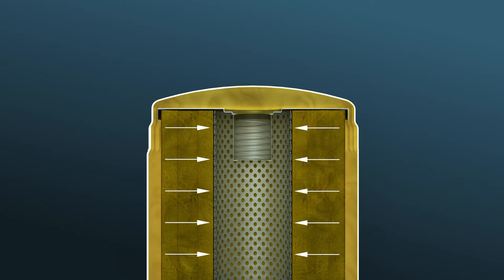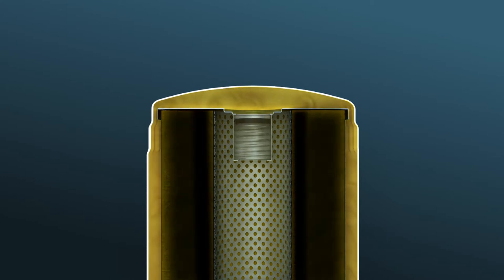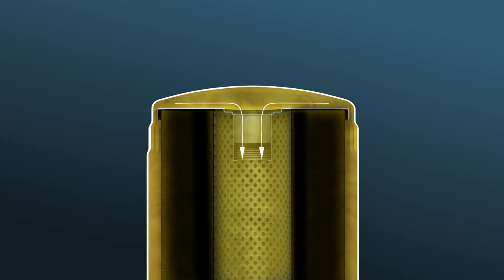The bypass valve is an important safety feature to prevent element failure. By opening at the right time, it safeguards the oil flow to the compressor element, even if the oil filter is clogged or at start-up when oil viscosity is high.